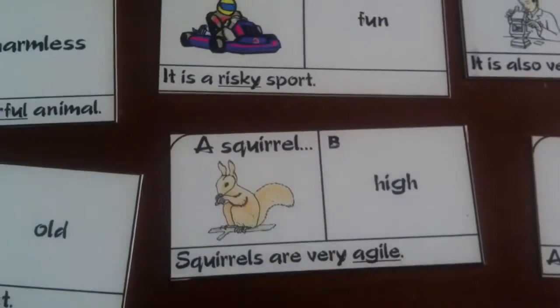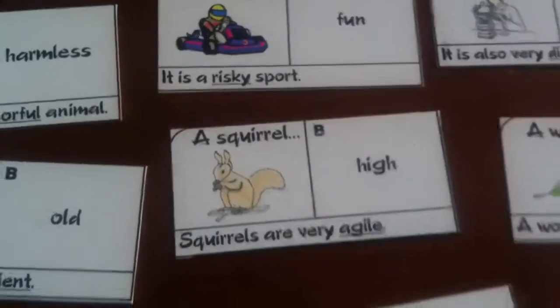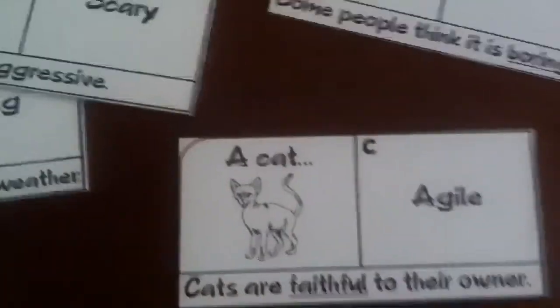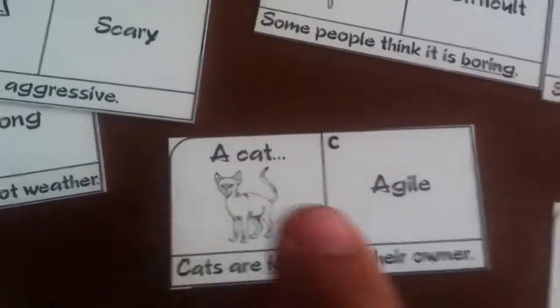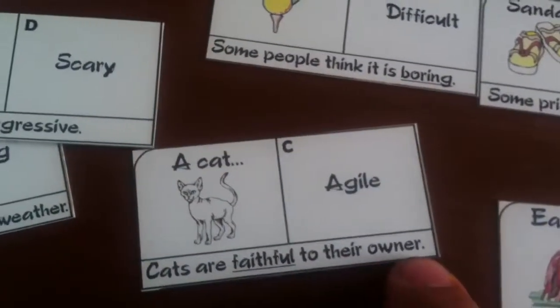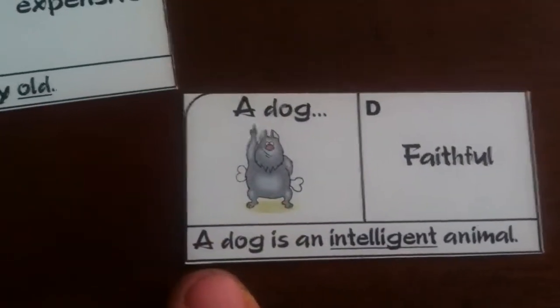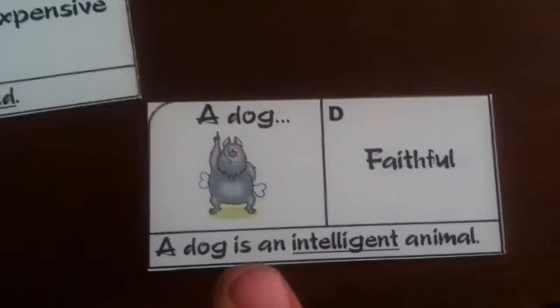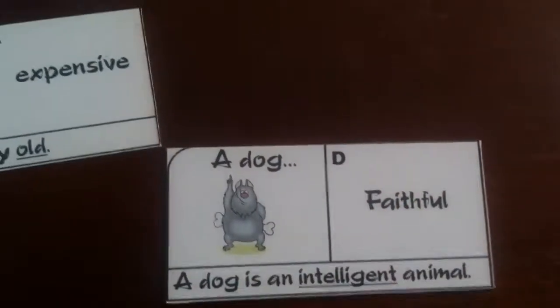'Squirrels are very agile.' Agile! Whoever has the 'agile' card, which is right here, is going to make a sentence: 'This cat is more agile than your squirrel.' 'Cats are faithful.' So whoever has the adjective 'faithful,' which is a dog card — here it is — he's going to make a sentence and say, 'A dog is more faithful than a kangaroo.'